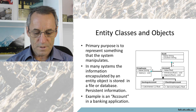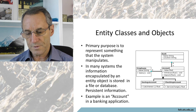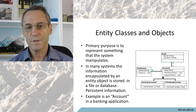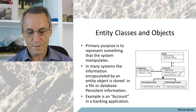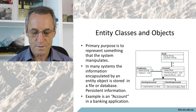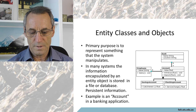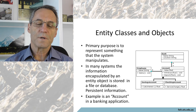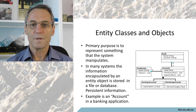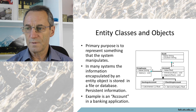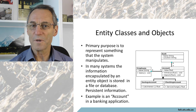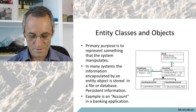Entity classes and objects have the primary purpose of representing something that the system manipulates. The information is encapsulated by the entity object and stored in a file or database - it is persistent information. An example is a bank account: it is an entity, it is manipulated by the system, and calculations are done on it.